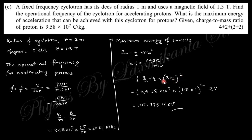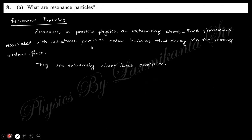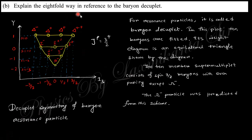To convert into electron-volt units, divide by the charge of the electron. Note that the charge of an electron and proton are equal in magnitude but opposite in sign. This calculation gives the maximum energy in MeV. The next question asks: what is a resonant particle? A resonant particle is an extremely short-lifetime phenomenon associated with subatomic particles called hadrons — a hadron with a very short lifetime is called a resonant particle.